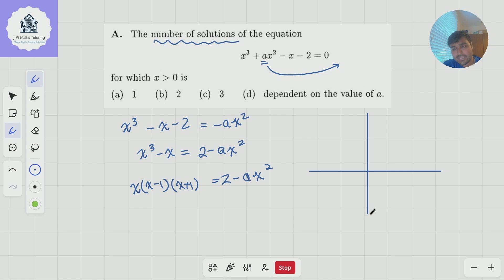So let me sketch the left-hand side. So y = x(x - 1)(x + 1). Pretty standard graph to draw something along those lines there. Let me change my pen color now. So now I've got 2 - ax². Doesn't matter what a is, the y intercept will always be 2, which is maybe there.